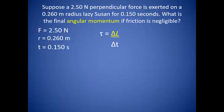Suppose a 2.5 Newton perpendicular force is exerted on a 2.60 meter radius lazy susan for about 0.150 seconds. What is the final angular momentum if friction is negligible? We are actually looking for a change in angular momentum here, so there must be some net torque being applied. To solve for that change in momentum, we simply need to rearrange our equation. We should soon realize that torque is equal to the perpendicular force applied at a certain radius, so we can plug in our expression for torque and end up with an equation that uses all of our given values.